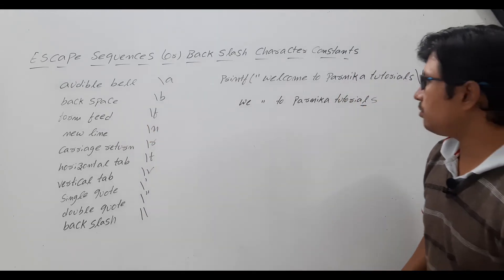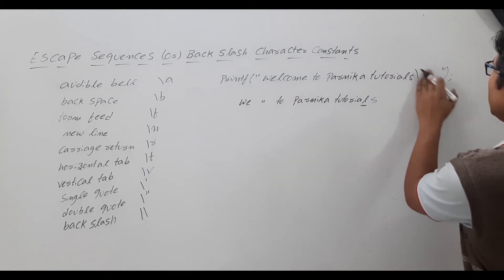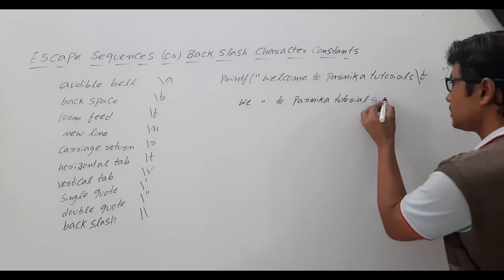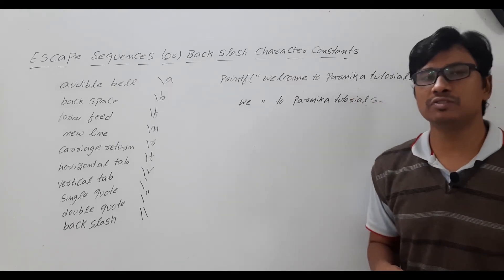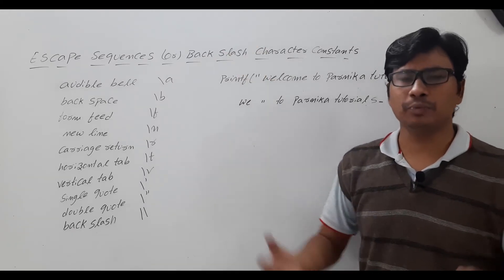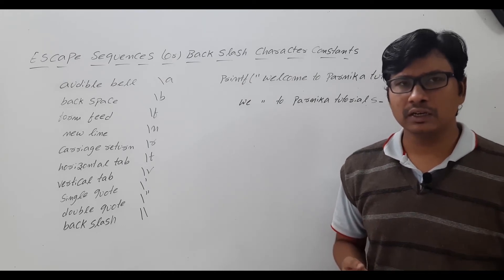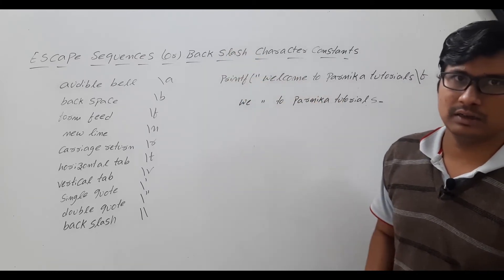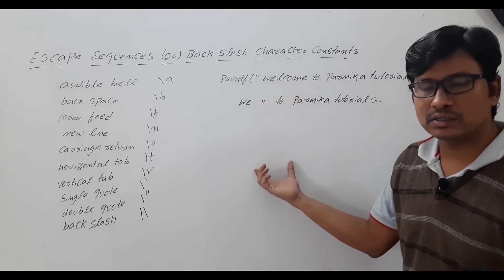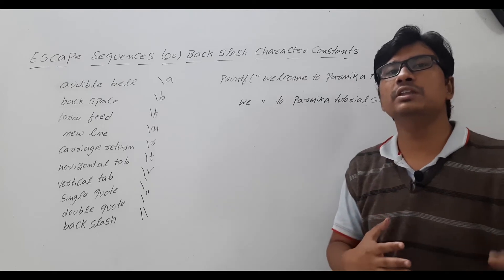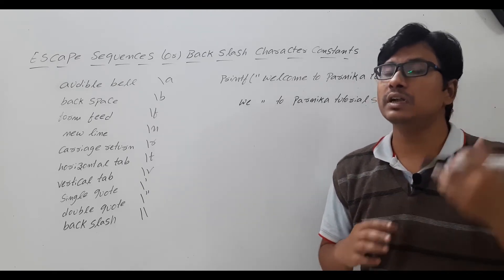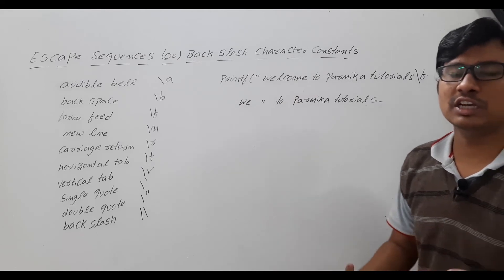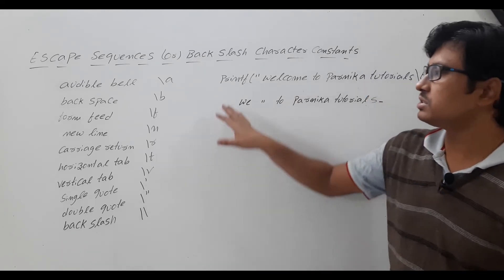Now coming to form feed — you will use backslash F. It will print 'welcome to Parnika Tutorials' and give some unknown character. The purpose of form feed is that if you have a very lengthy C program with 1000 lines and you cannot print it in a single page, after every 100 lines you can use backslash F so that the remaining statements are printed on the next page.